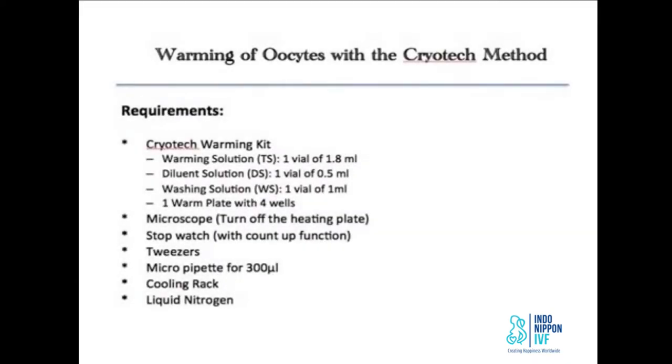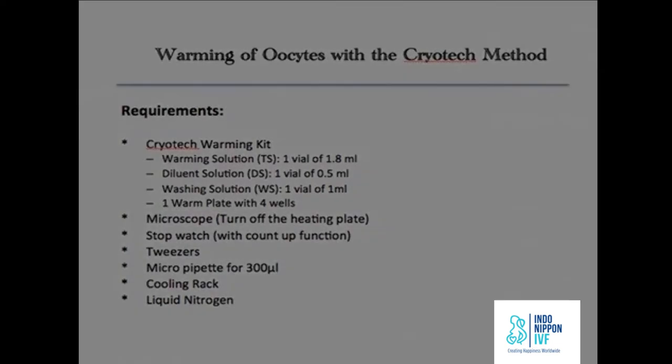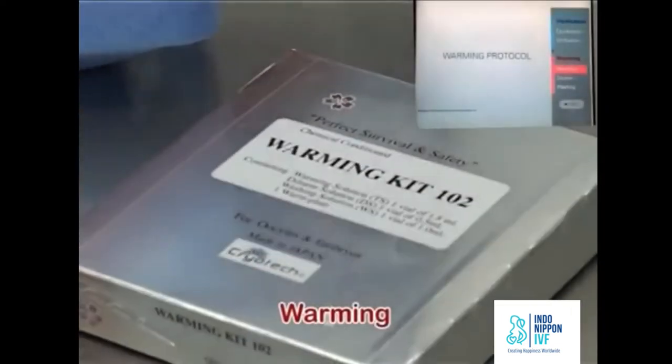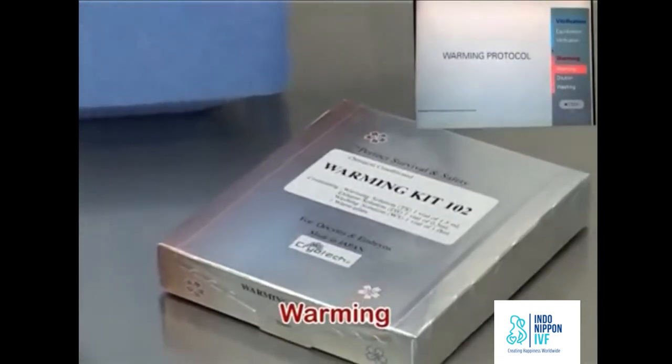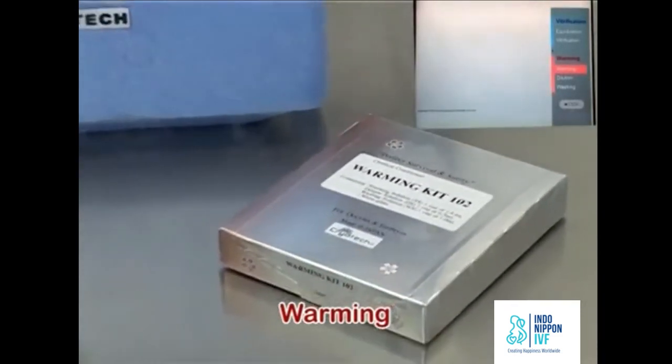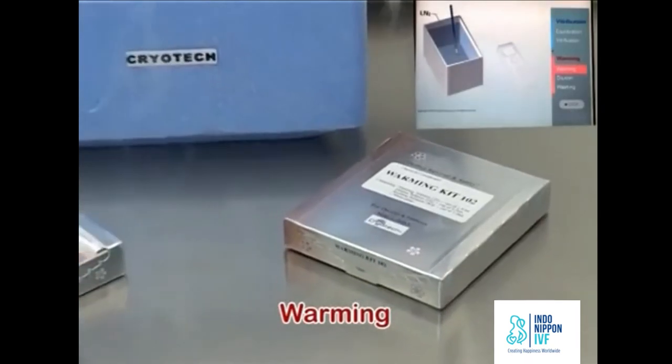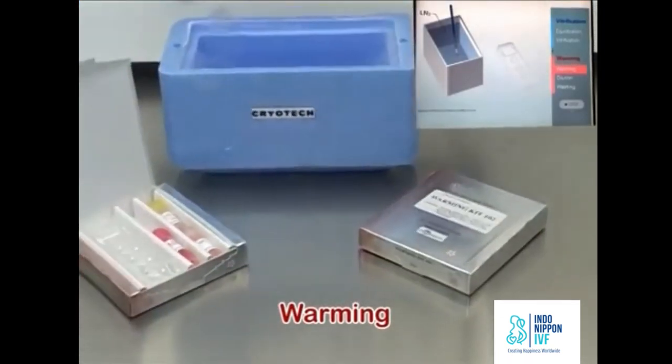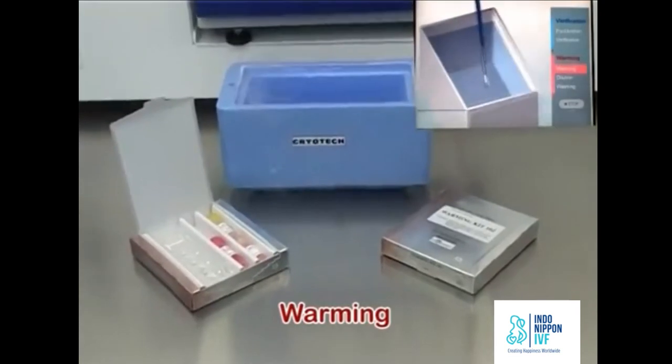The warming process. Before beginning the process, ensure that the microscope stage heating is turned off. Use a pipette that is the right suitable internal diameter to optimize the dilution of the solutions to get a high survival rate after warming. Place the warm plate and TS vial with cap in the incubator at 37 degrees at least 4 hours before warming. Overnight storage is recommended. Bring DS and WS vials to room temperature of 25 to 27 degrees centigrade at least 1 hour before warming.